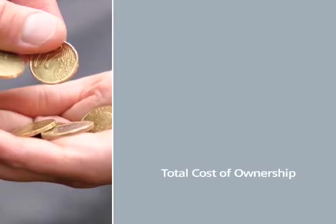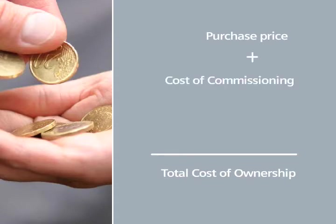To get the greatest value from your investment, the instrument you purchase must have a low total cost of ownership and deliver more than just the process variable. How do you calculate total cost of ownership for an instrument? The total cost of ownership is a sum of three variables: the purchase price of the instrument, the cost of commissioning the instrument, and the cost of maintaining that instrument. Let's examine how each of these variables can be optimized to provide the greatest return on your investment and lower your total cost of ownership.